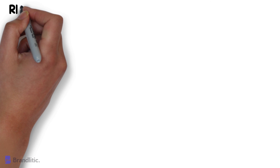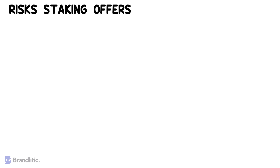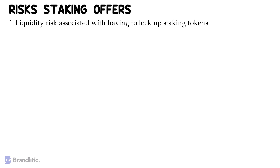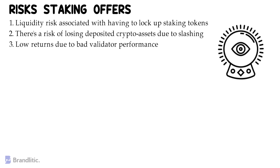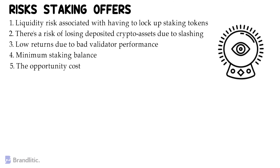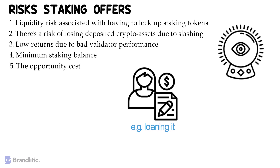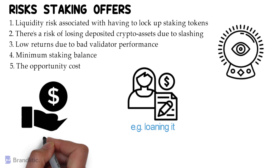Let's look into the risks staking crypto offers to an investor. First, liquidity risk associated with having to lock up staking tokens. Second, there is a risk of losing deposited crypto assets due to slashing. Third, low returns due to bad validator performance — validators may need to perform functions like providing prices as oracles, all of which require technical expertise, and the lack of it is a risk to a delegator. Fourth, minimum staking balance, which can be a hindrance for small-ticket investors. Fifth, opportunity cost — there is an opportunity cost for using tokens differently, such as loaning them, and also an opportunity cost to stake with a different validator on the same network.